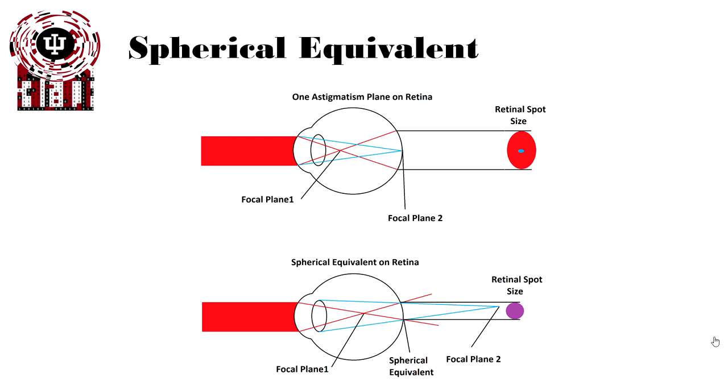At the top, we have an astigmatism with the plane of the retina focused on the retina in one spot, and in front of the eye in the other spot. What that has is that the spot or the plane that's on the retina actually has a very small focal size, just like we talked about before, but that the image that's in front of the retina now has a larger focal size, a larger retinal spot size.